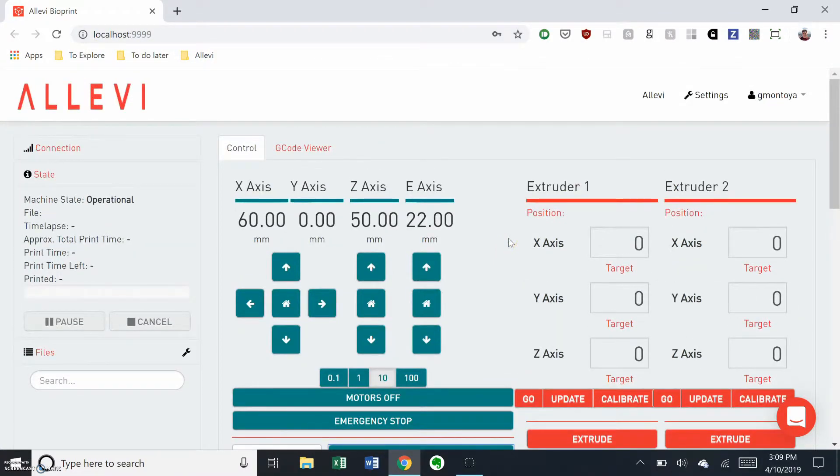With the step increment set to 10 mm, move up the z axis. This will bring the bed plate back up.